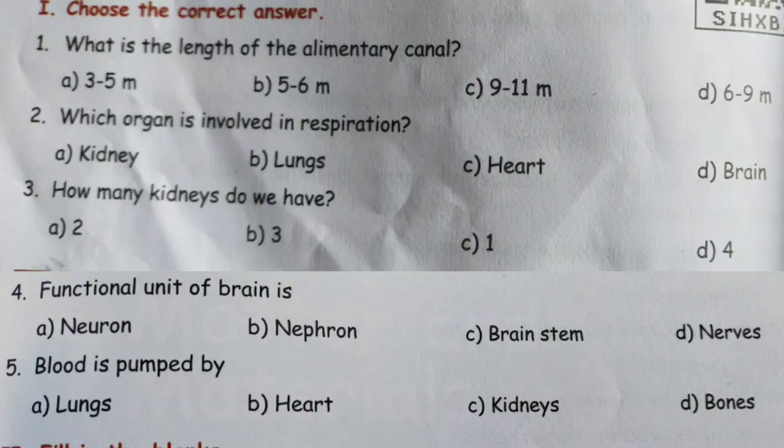Question number 2: Which organ is involved in respiration? Option A: kidney. Option B: lungs. Option C: heart. Option D: brain. What is your respiration system? Very good — Option B, lungs.